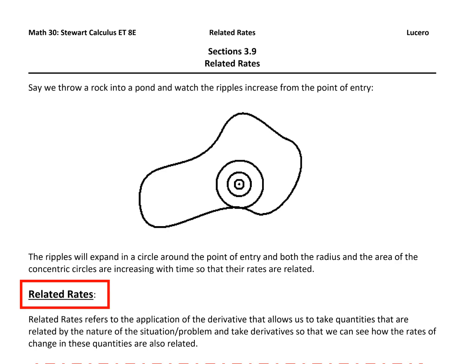The rates are not the same. The rate at which the radius increases is in inches per second or feet per second, while the area would be in inches squared per second or feet squared per second. But they are connected — the way the radius is increasing is related to the way the area of those ripples is increasing. So how do we use calculus to come up with this relationship and see how those rates of change are actually related?